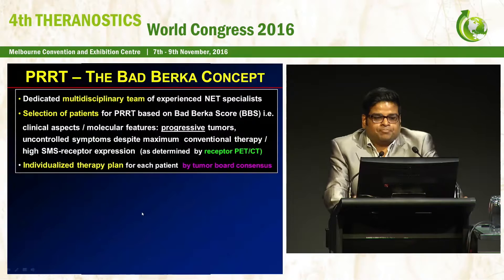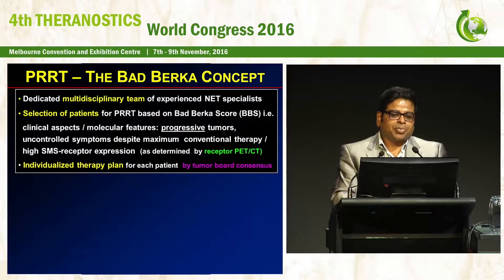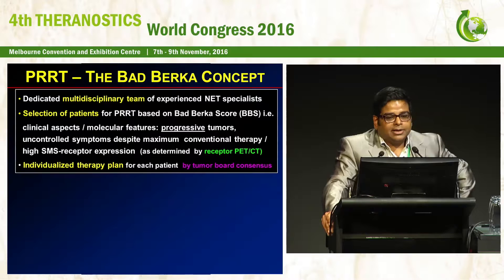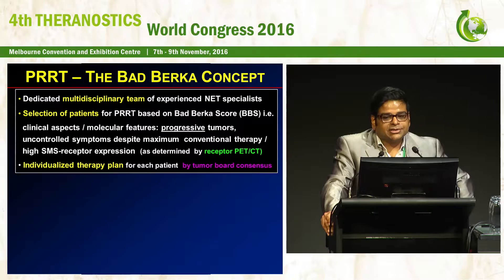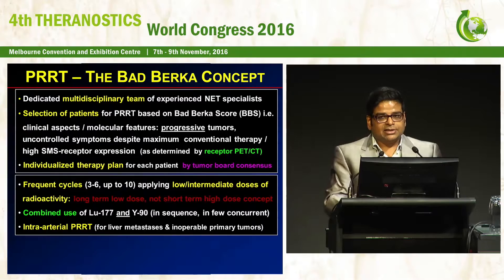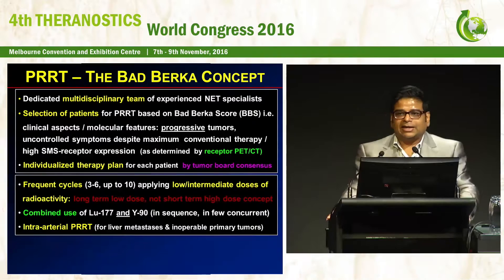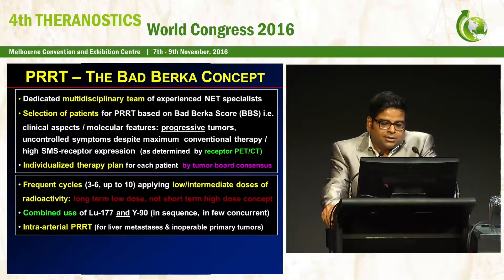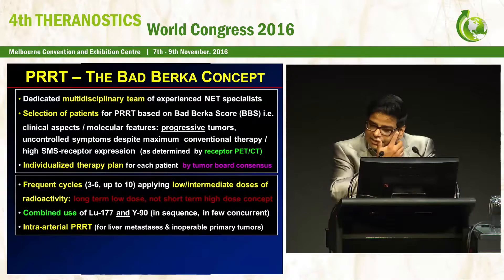The indication for PRRT is basically progressive disease and uncontrolled symptoms despite maximum therapy. The plan for each patient is individual and is based on tumor board consensus of experienced NET specialists. Our policy has been to apply frequent cycles — about 3 to 6, up to 10 — applying low or intermediate doses of radioactivity, a long-term low-dose rather than a short-term high-dose concept. In selected cases, we also perform intra-arterial PRRT and combine lutetium and yttrium in sequence or concurrently.